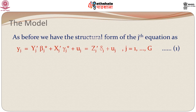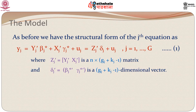Let us look at the model first. As before, we had the j-th equation as y_j equals y_j-prime beta_j-star plus x_j-prime gamma_j-star plus u_j. We simplify this and write it as z_j-prime delta_j plus u_j. Here z_j is y_j and x_j, so z_j-prime becomes an n by (g_j plus k_j minus 1) matrix, and delta_j becomes a vector of dimension (g_j plus k_j minus 1), containing g_j minus 1 beta_j-stars and k_j gamma_j-stars.